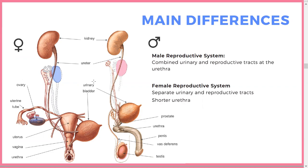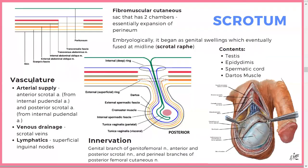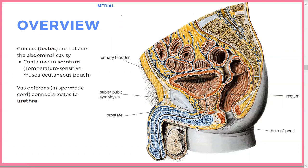The gonads are contained in the scrotum, which is a temperature-sensitive musculocutaneous pouch. The vas deferens is what connects the testes to the urethra — that's the connection between the reproductive and urinary systems. You should be able to recognize the bulb, the prostate — which sits right below the bladder — and the pubic symphysis.